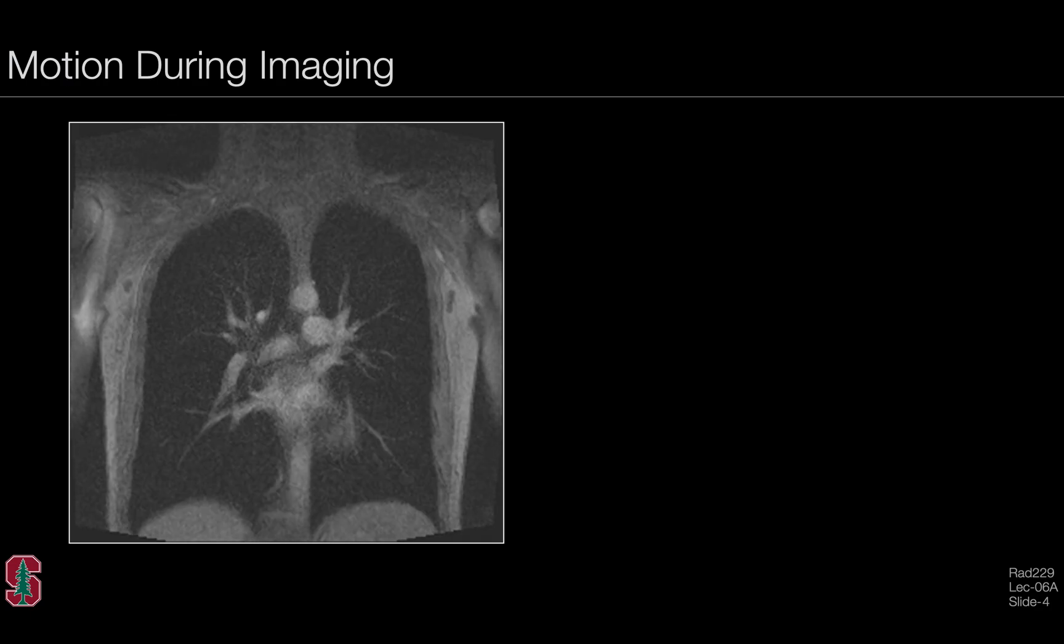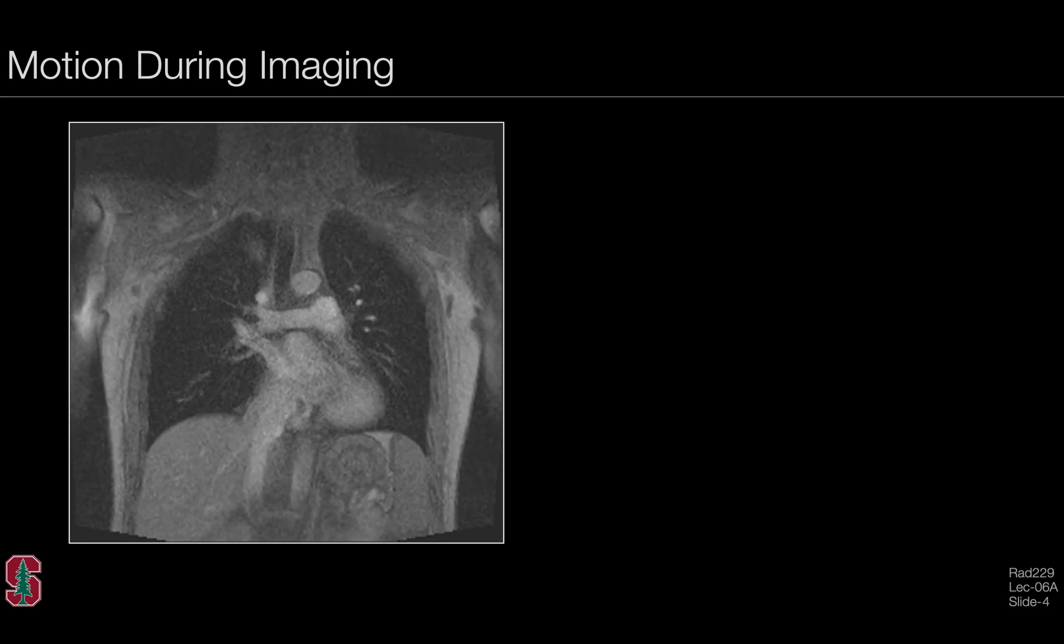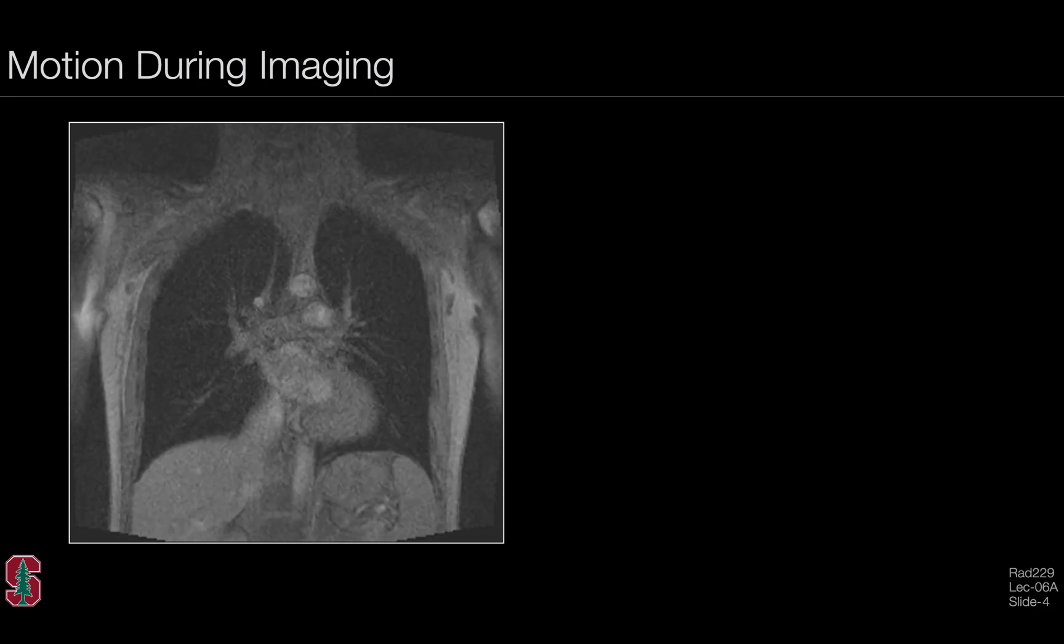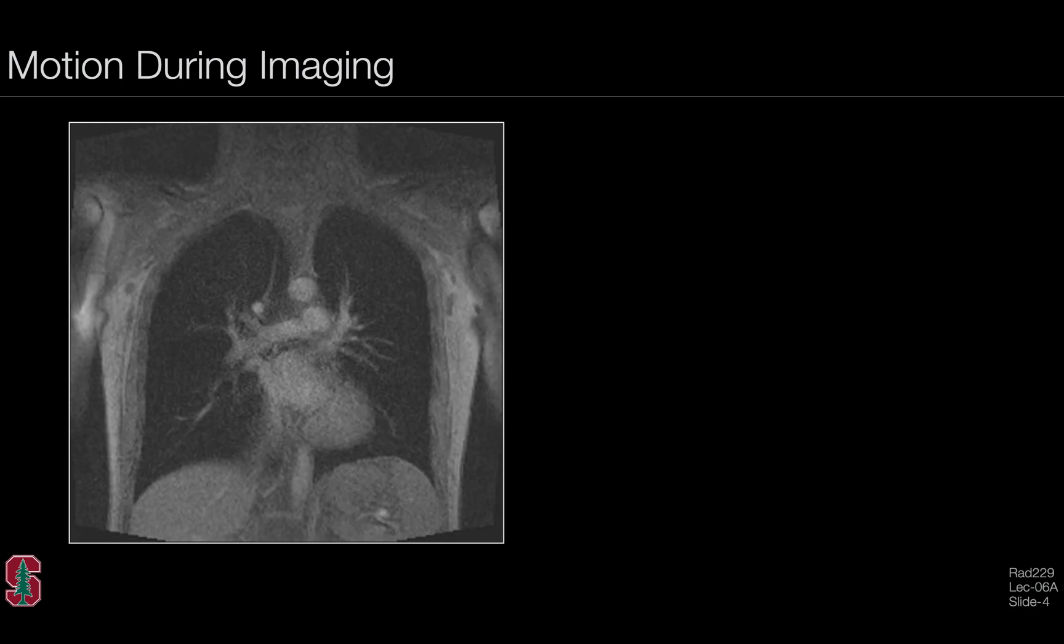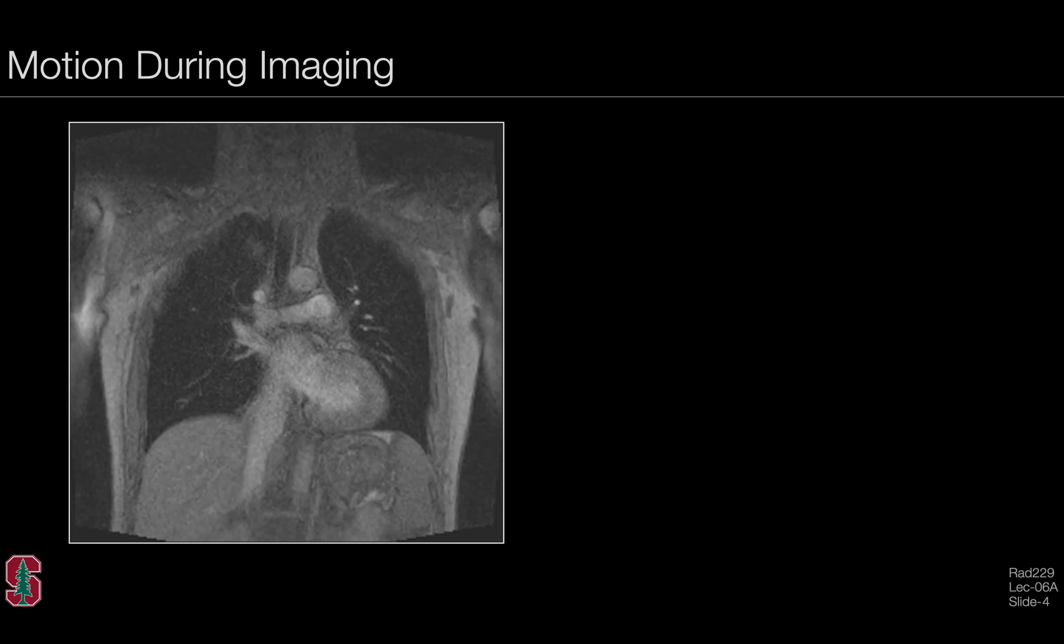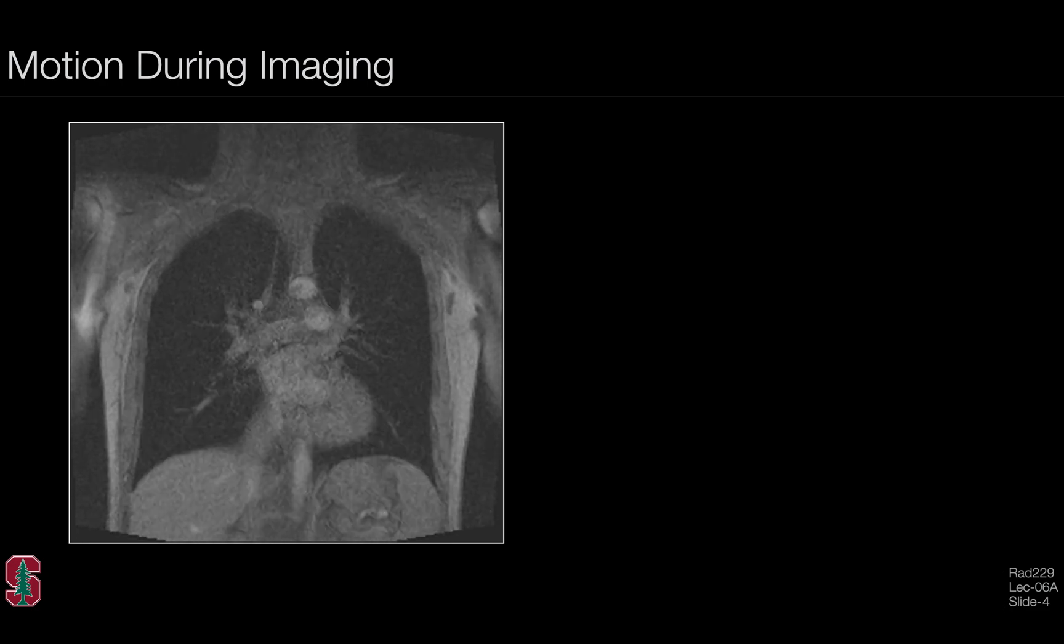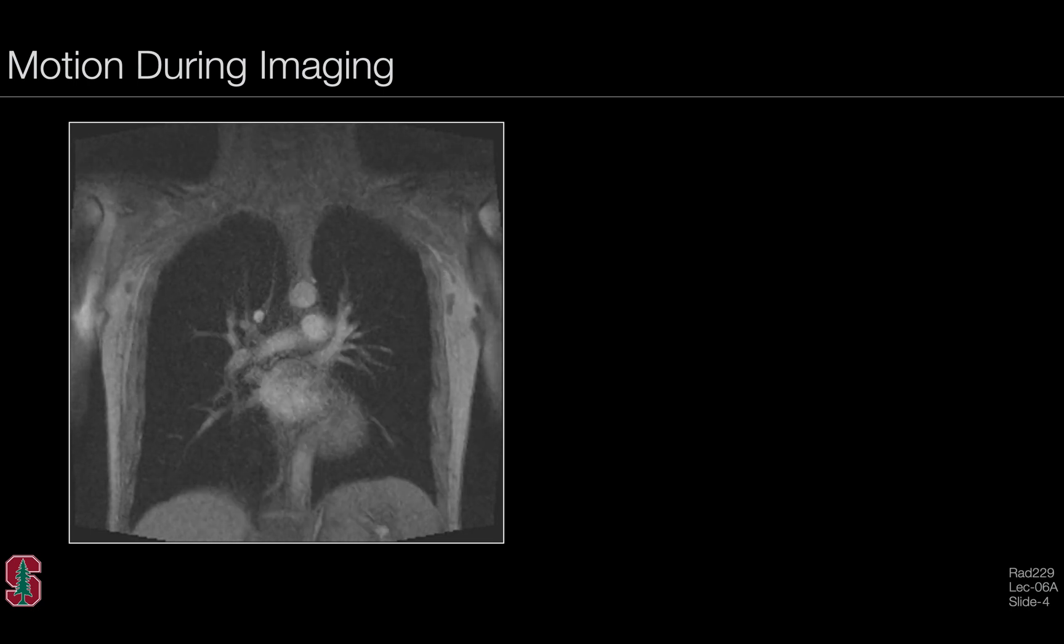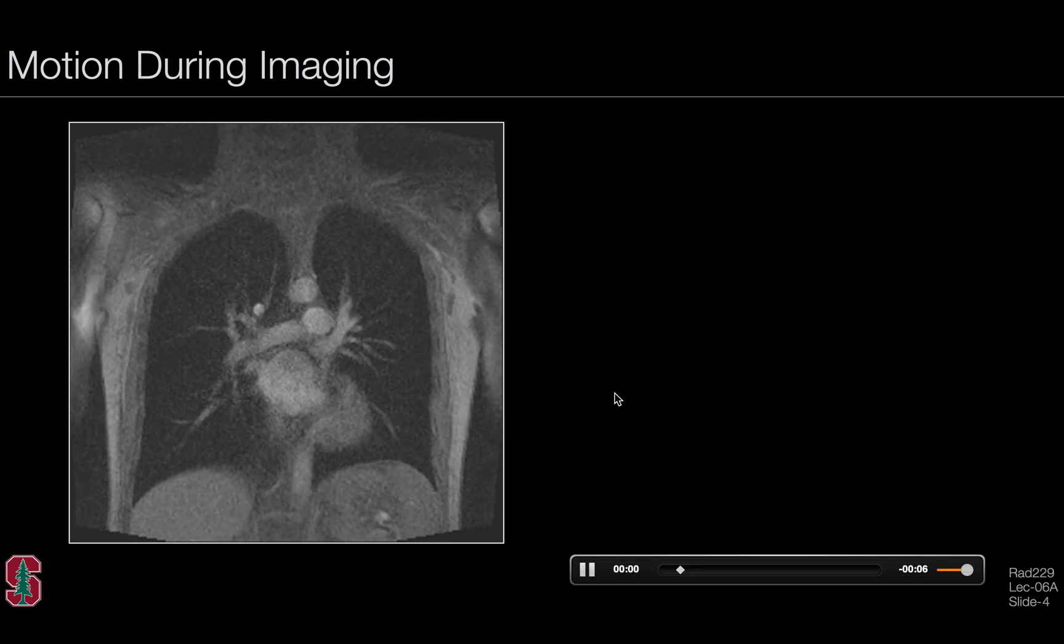In this image here, using real-time magnetic resonance imaging, a topic we'll touch on in later lectures, using ultra-fast imaging methods we can see that the human body undergoes a wide range of dynamic motions during breathing. You can see the lungs moving up and down, the liver moving up and down, as well as the heart fluttering away quite quickly. This is sped up relative to real physiologic time.